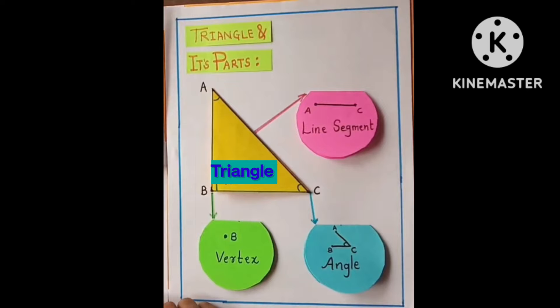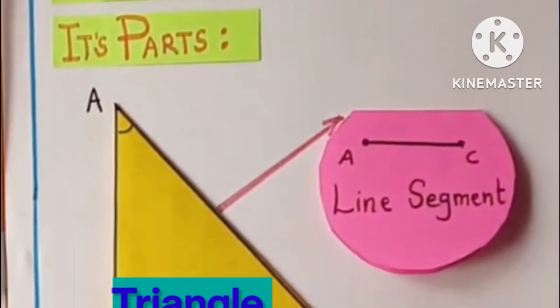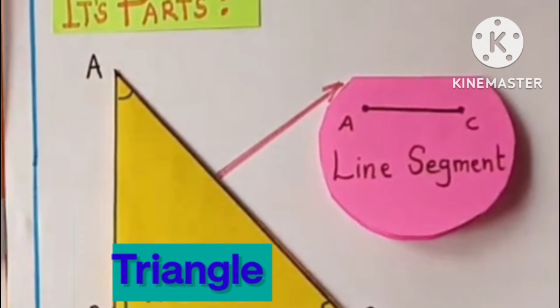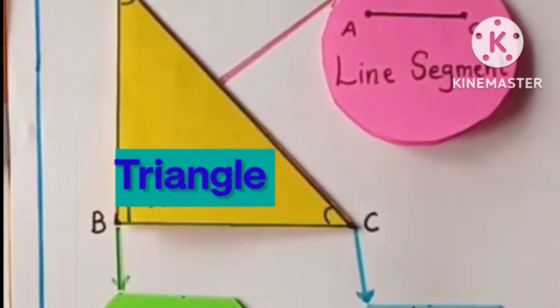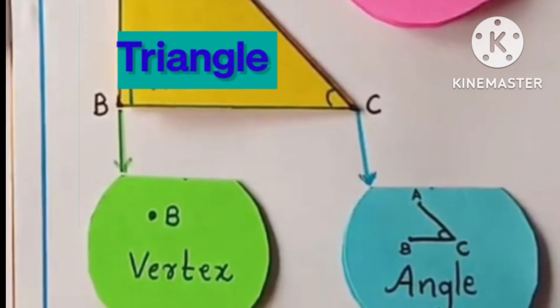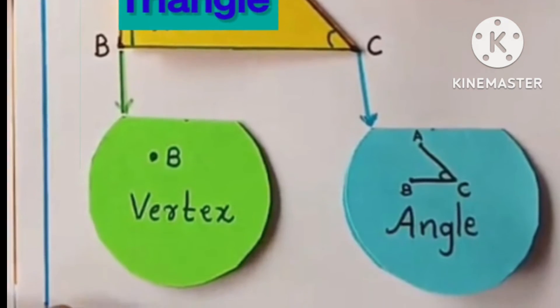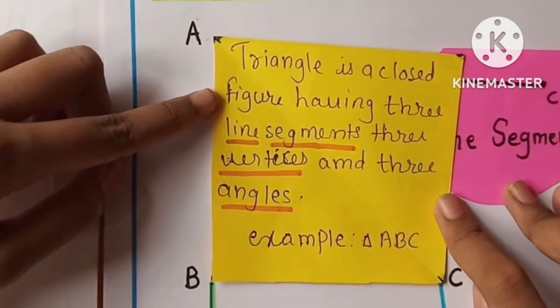The next page is triangle and its parts. The first one is triangle. Here is the triangle and its line segment AC, then angle ABC, and vertex B. Now we'll see the triangle. Here is the definition of triangle and its example.